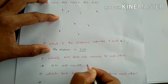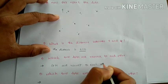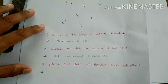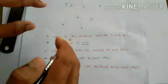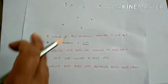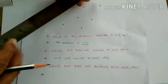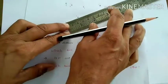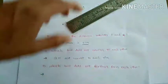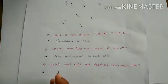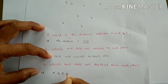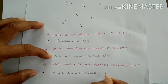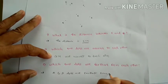So G and H are nearest to each other. The next question is: which two dots are furthest from each other? G and F were around five or six centimeters. Now looking at A and D, they are around seven centimeters apart. So A and D are furthest from each other — they are very far away.